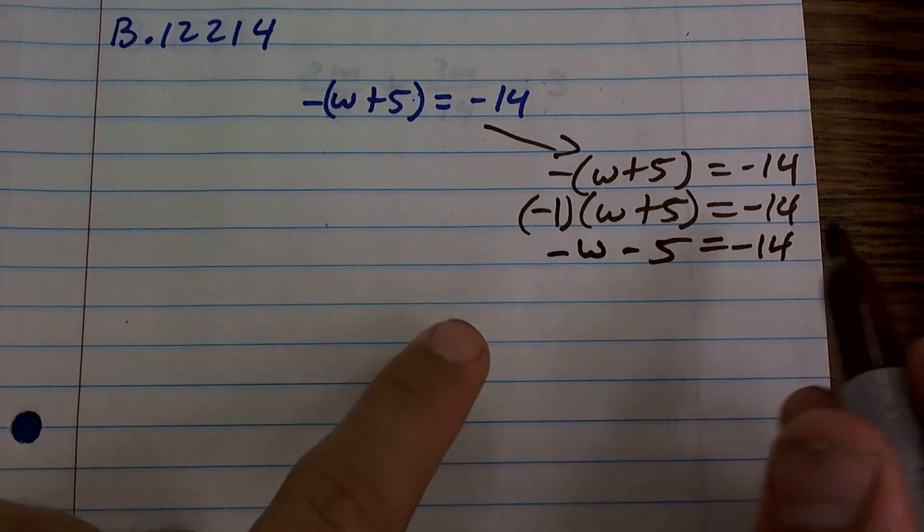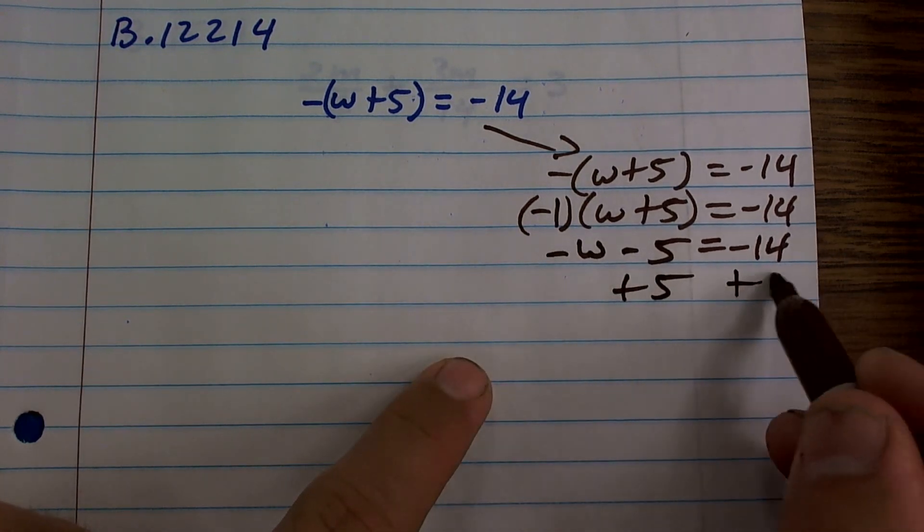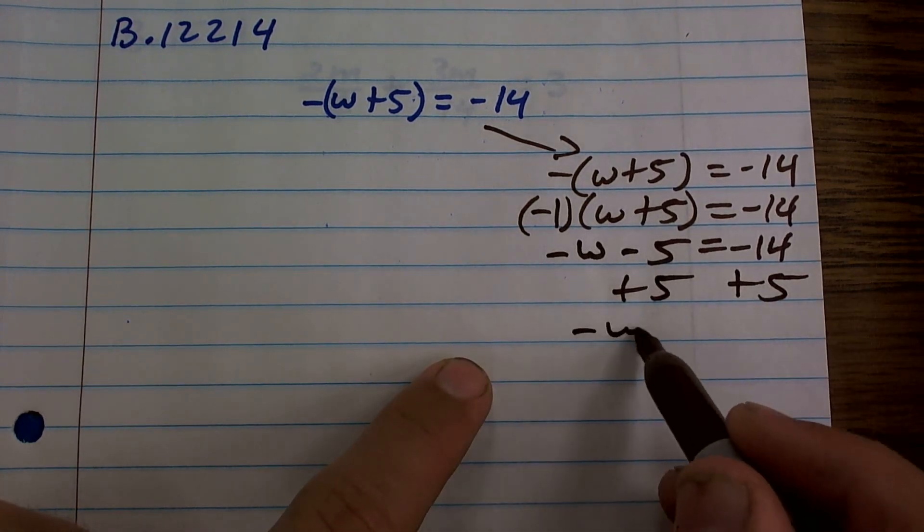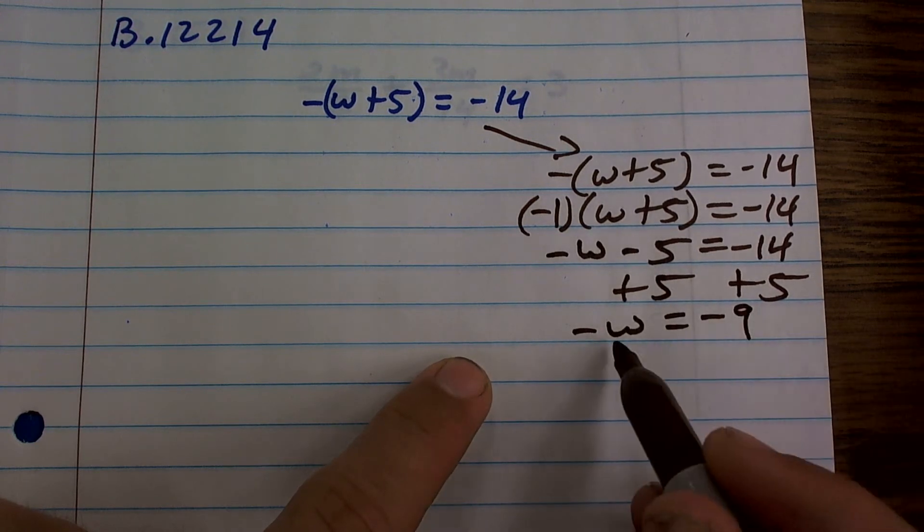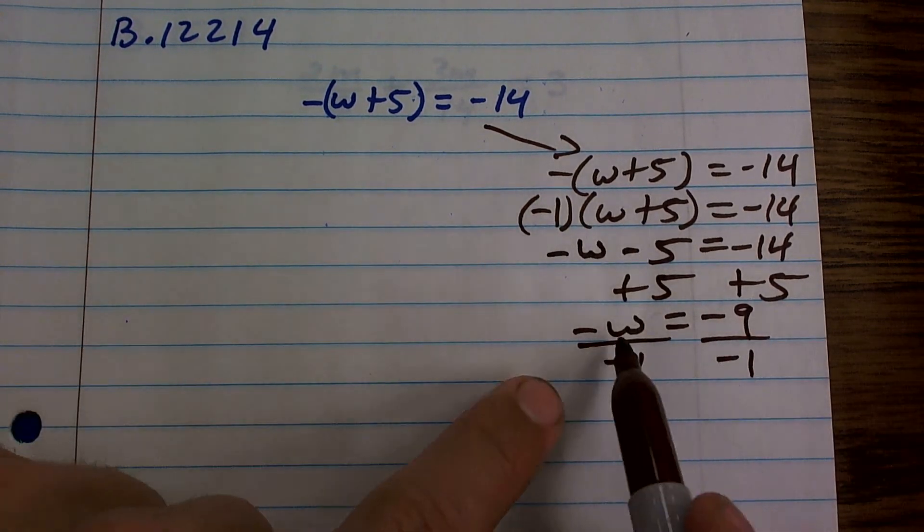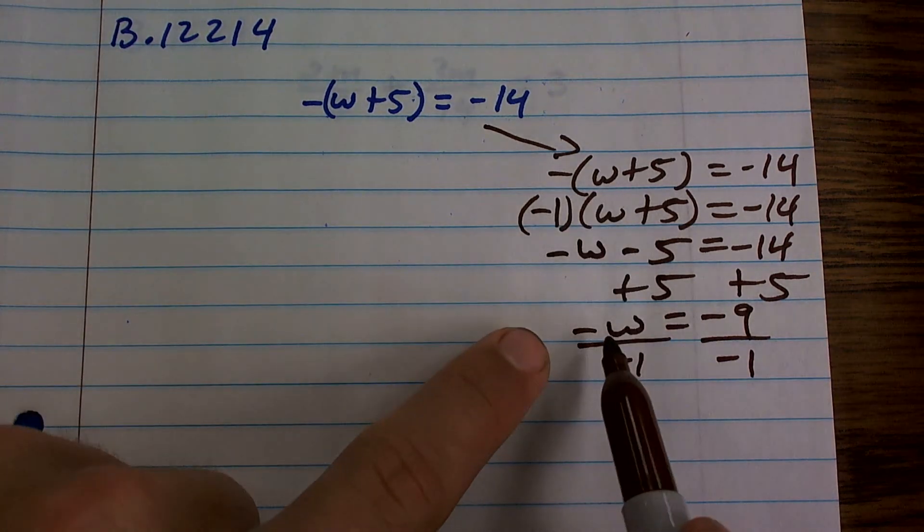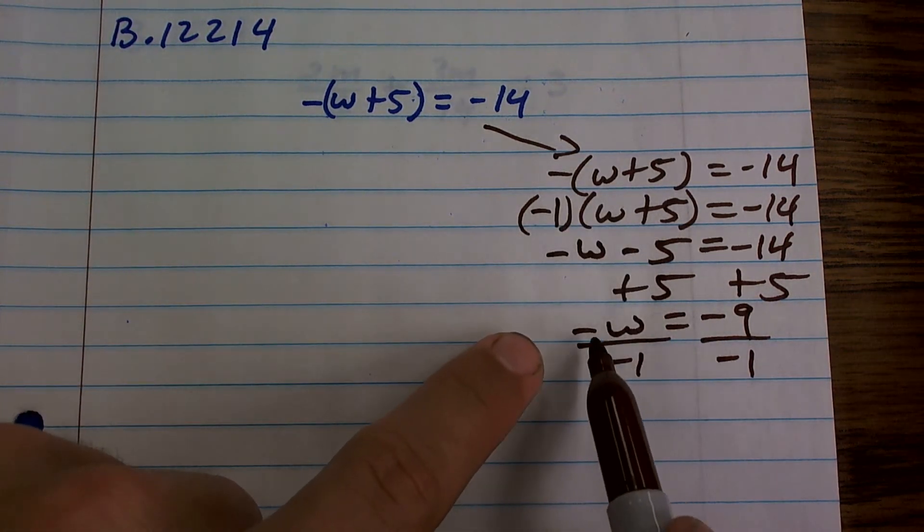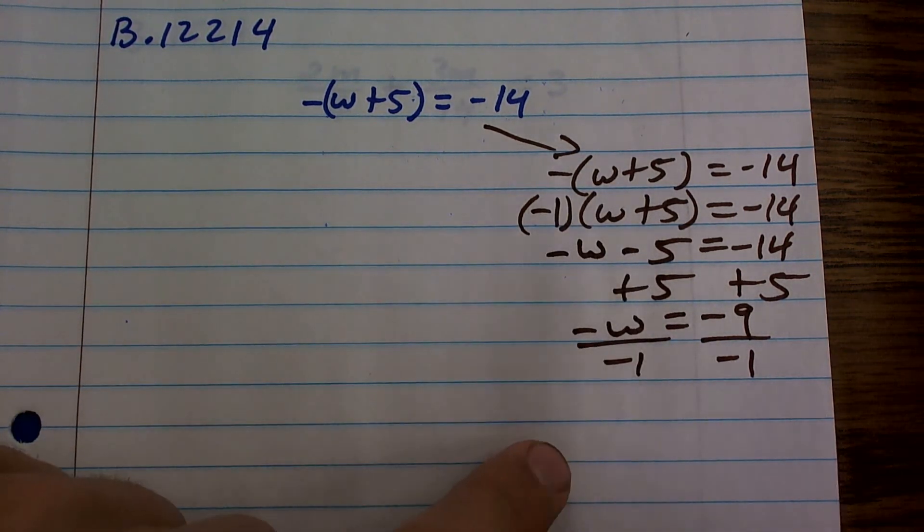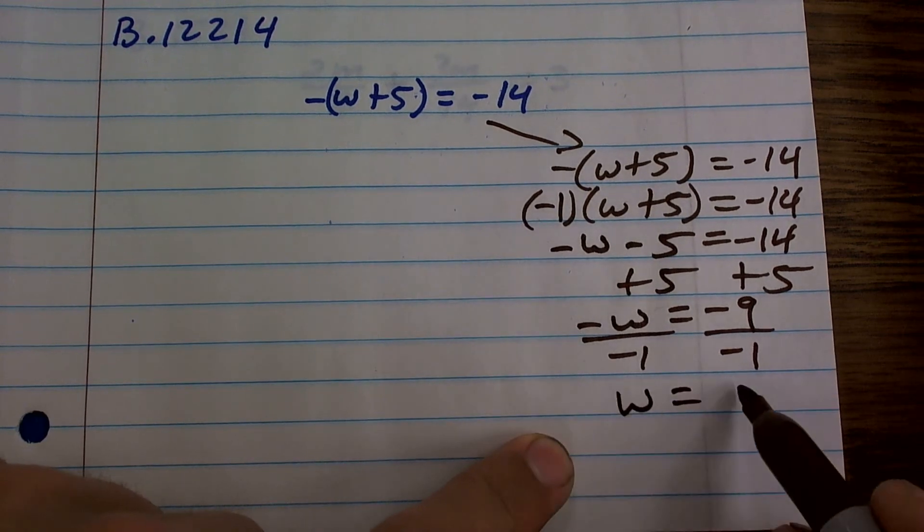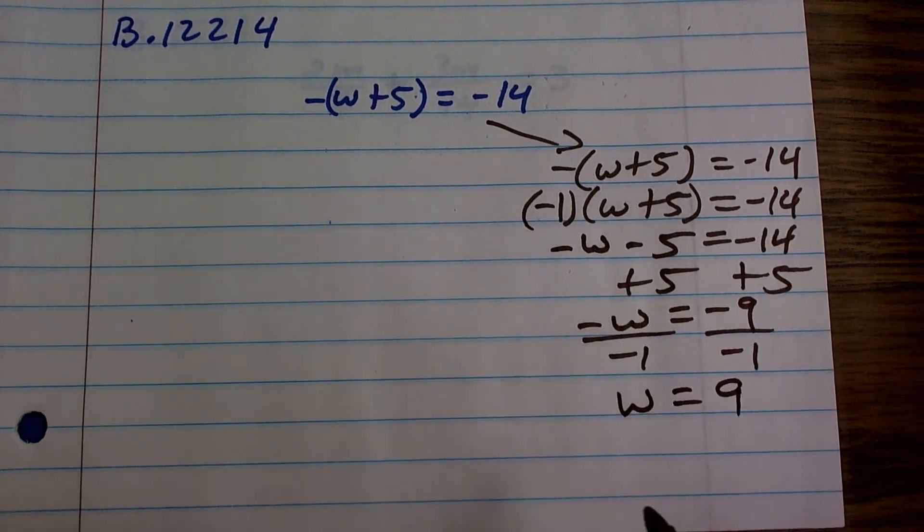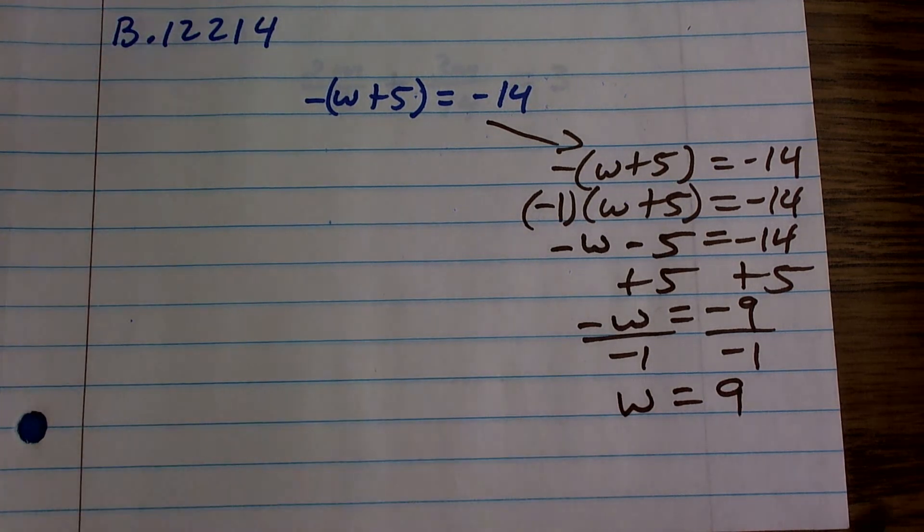Now I have a two-step equation, so I'm going to use my inverse operations. Then I'll divide by negative 1 because, remember, negative is the negative 1. So I'm going to undo multiplying by negative 1 by dividing by negative 1 and end up getting w equals 9. There's nothing wrong with that. That's perfectly fine. That's exactly how I've taught it before. It works.